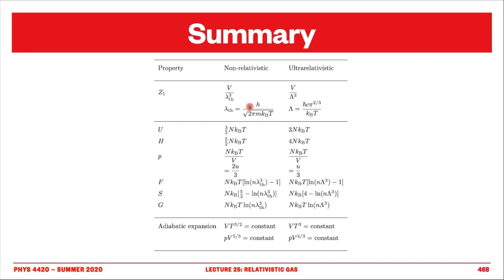This summary is taken from Blundell and Blundell's book, providing a table of properties for non-relativistic and ultra-relativistic ideal gases. The adiabatic index is 5/3 for non-relativistic particles and 4/3 for ultra-relativistic ones, and this coefficient is the signature of whether you have a relativistic or non-relativistic gas. Thank you very much for your attention. The next screencast will be on trying to describe a gas in a more realistic way by going beyond the ideal gas law and introducing interactions.